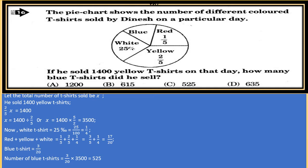The total number of t-shirts he sold is 3500. White t-shirt is 25%, and 25% = 25/100 = 1/4. The part of red, yellow, and white is 1/5 + 2/5 + 1/4 = 3/5 + 1/4 = 17/20.